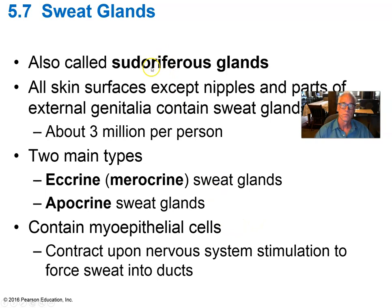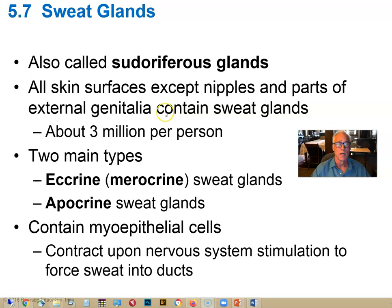Sweat glands are another appendage of the skin, called sudoriferous glands. They're found in the skin on most parts of the body. There are two main types: eccrine sweat glands, which produce a watery secretion important in evaporative heat loss from the body, and apocrine sweat glands, found in the axillary and anogenital regions, which become active in puberty.